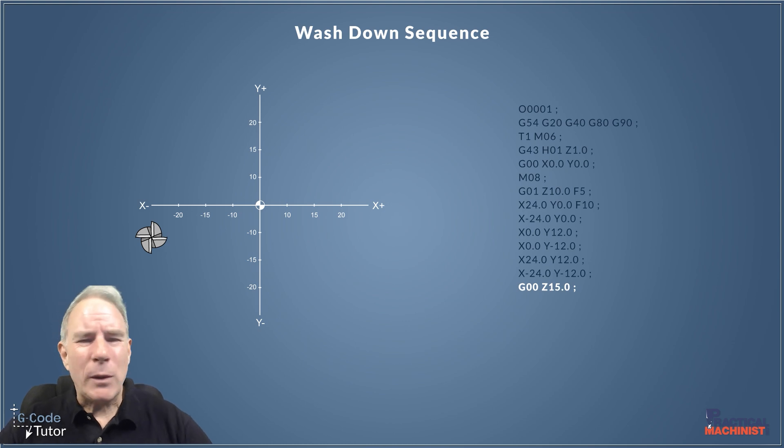So once we've done all that we can now rapid our tool up out the way so I'm rapidly up 15 inches from our table here or from wherever I set my Z0 and we're using G00 so the machine is going to move in as fast as possible way using a rapid move.